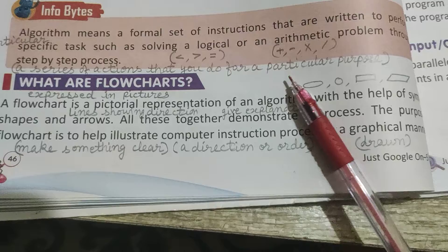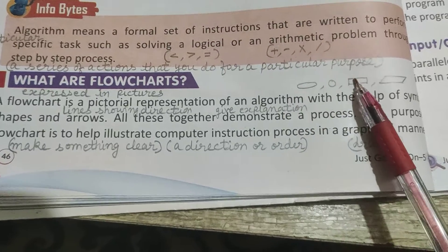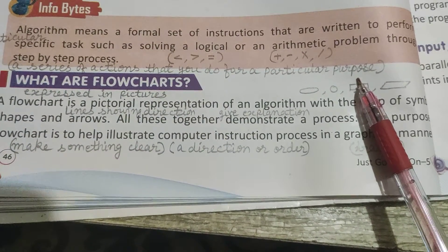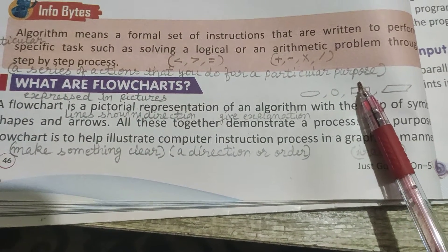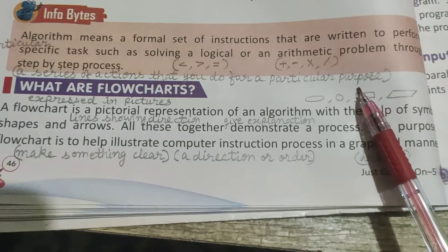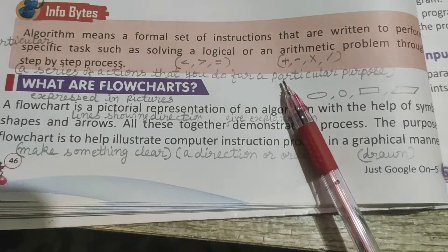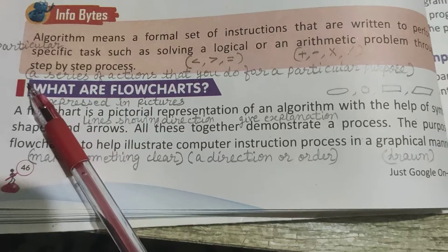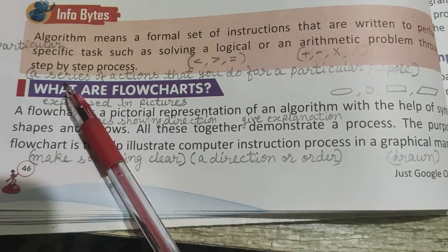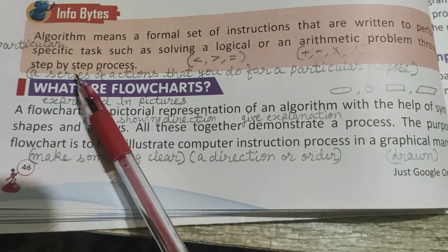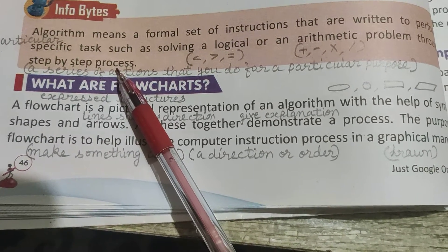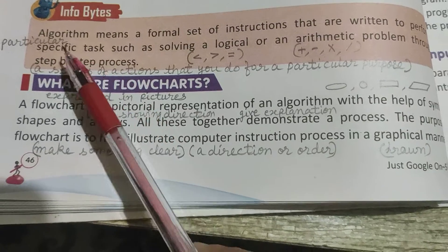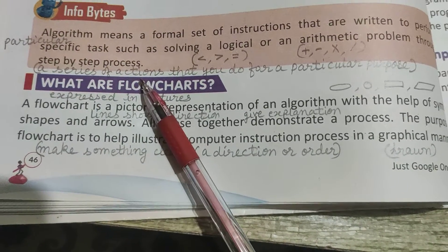Process का मतलब है a series of actions that you do for a particular purpose — किसी particular purpose की वजह से आप कुछ actions करते हैं एक series में, serial wise — उसको हम process कहते हैं। ठीक है, algorithm आपको समझ में आ गया।